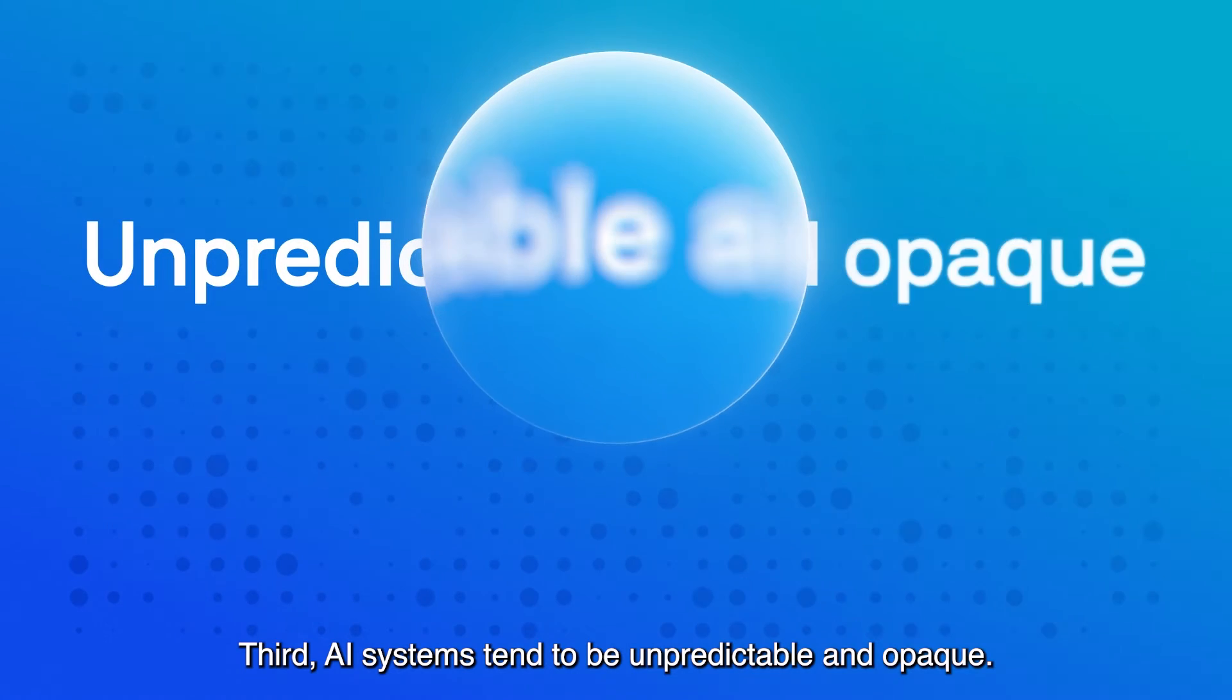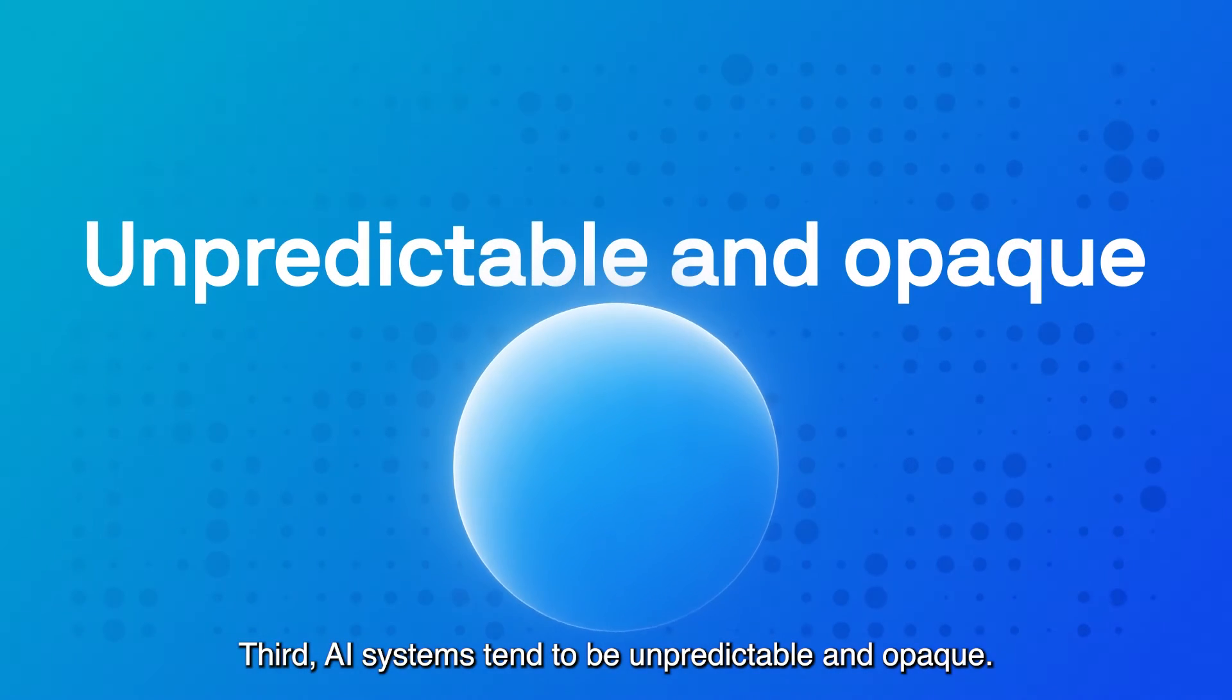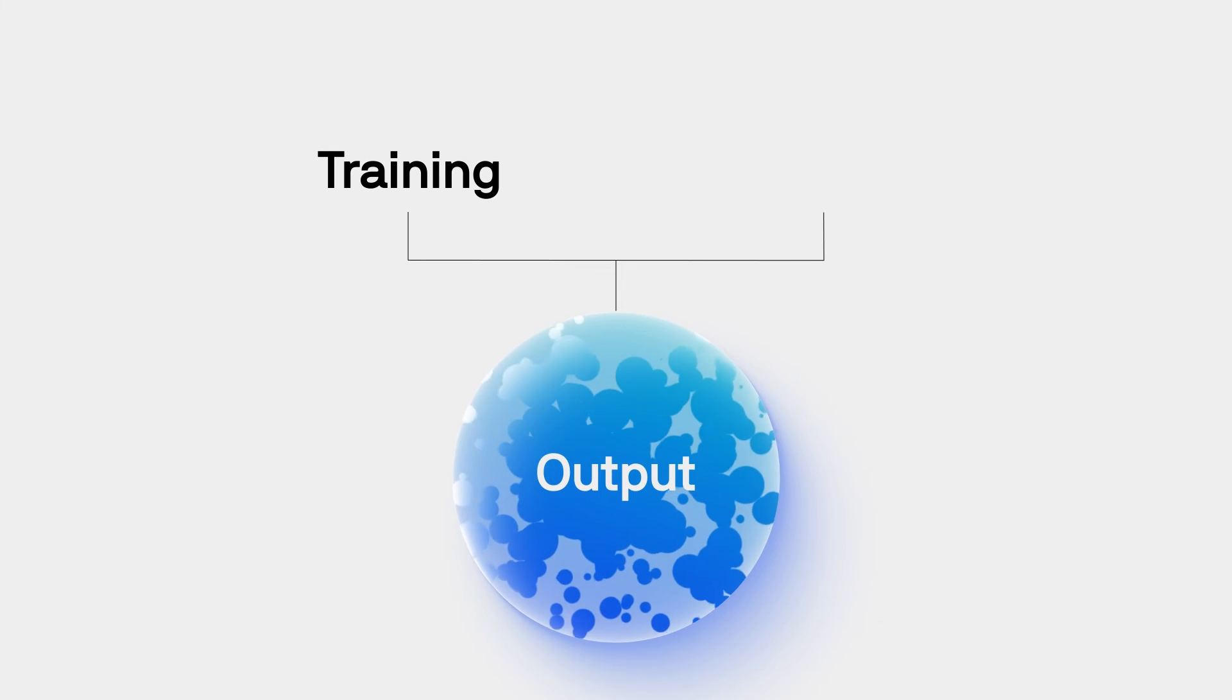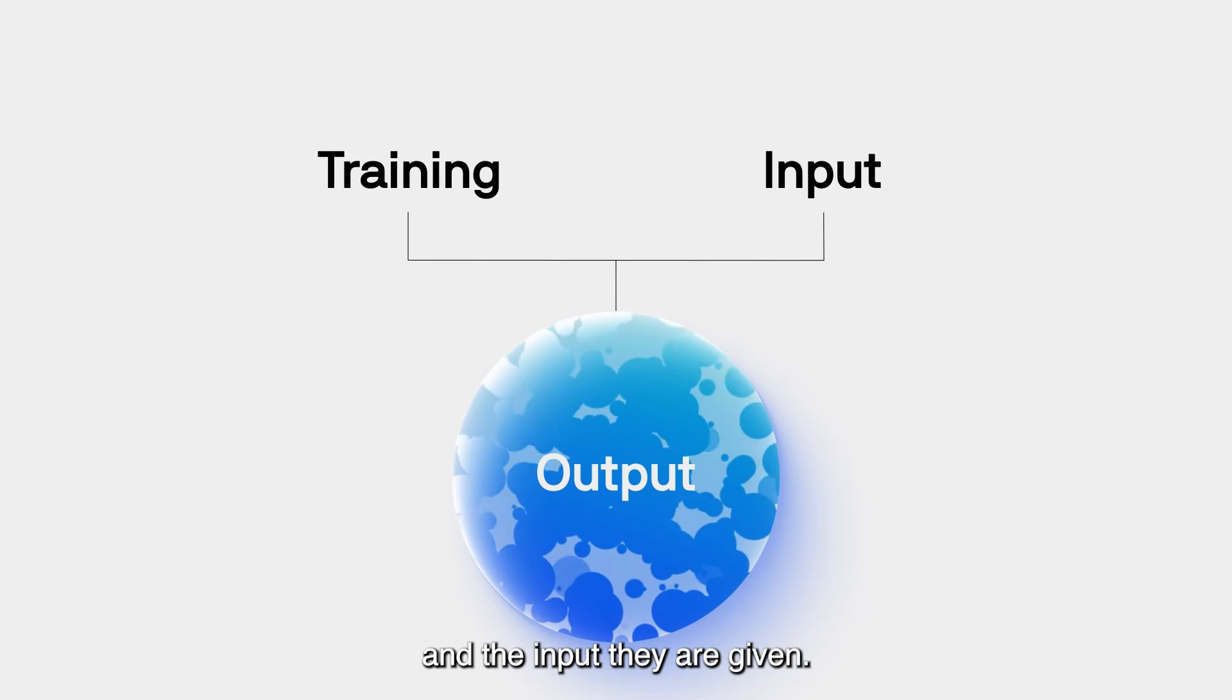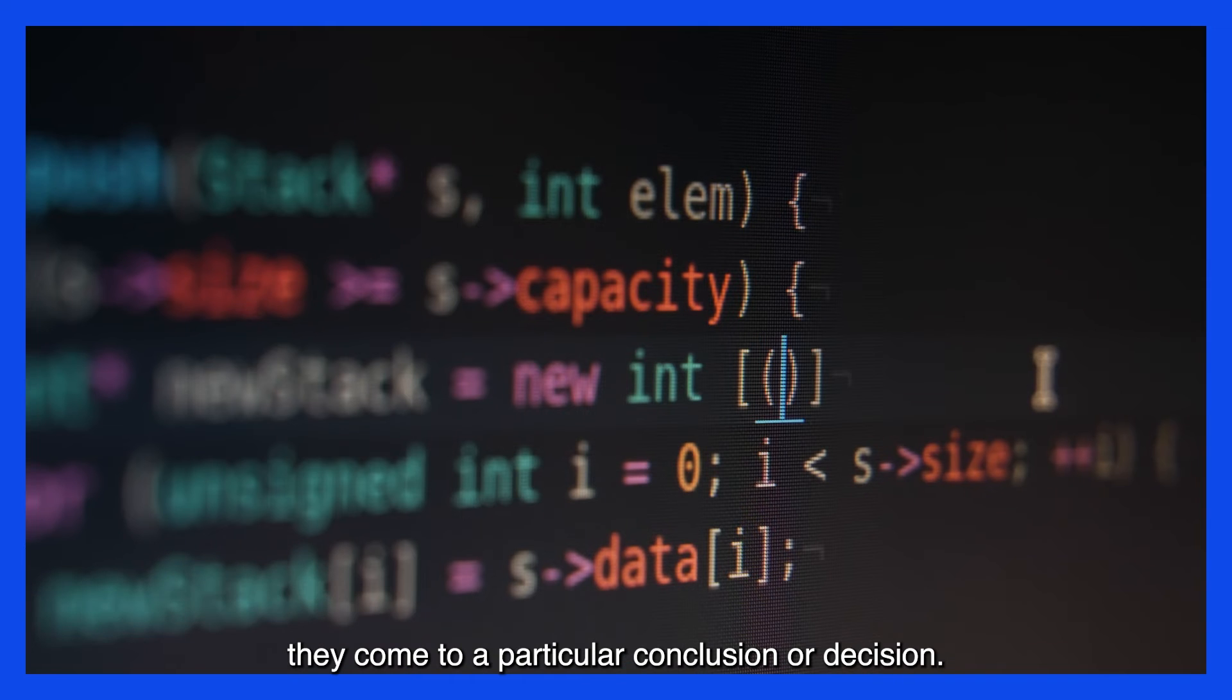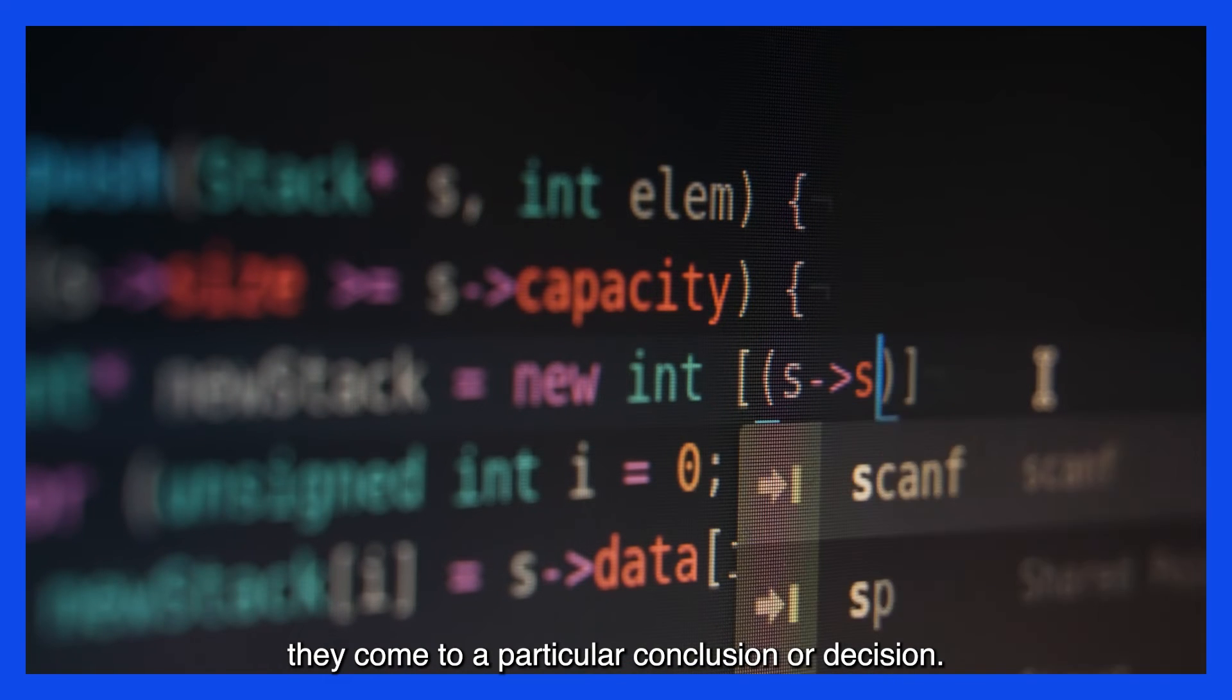Third, AI systems tend to be unpredictable and opaque. They produce different outputs depending on how they've been trained and the input they are given. It takes special effort to understand how and why they come to a particular conclusion or decision.